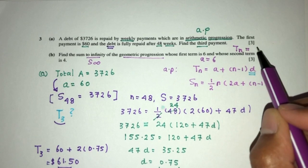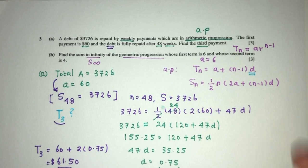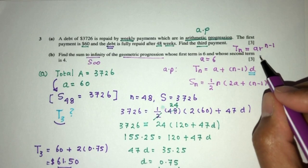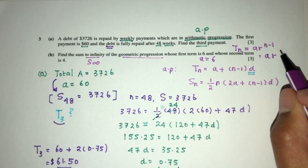T of N for a GP is A times R to the N minus 1. Now, again, this is given to you on your list. Now, T of 2, that will be when N is 2, that will be A times R, N minus 1 is, so 2 minus 1 is 1.